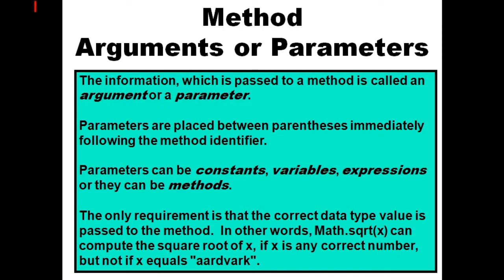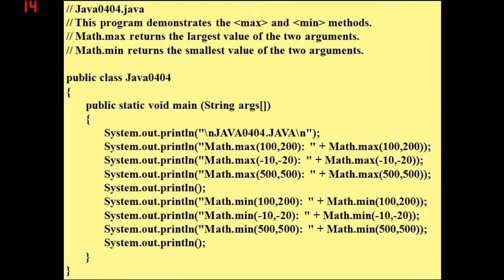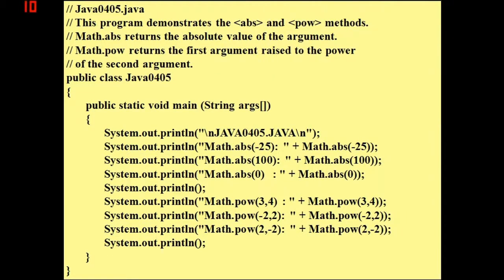Here we have the Math.abs method and the Math.pow method. Basically Math.abs returns the absolute value of the argument. So if you put a negative number in there it's going to just take out the negative and leave it the same number without the negative. If you put a positive number in there it's just going to leave it the same.